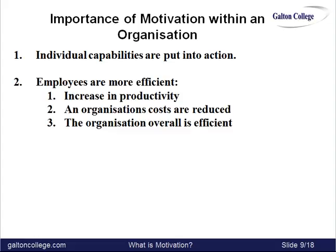Employees are more efficient; when they are more efficient there is increased productivity, and as mentioned, the organisation's costs are reduced. The organisation overall is efficient, and that's to the benefit of everyone — not just the owners but the employees as well: job security, perhaps higher wages, perhaps expansion of the business. So the local community even will benefit through what we call multiplier effects.